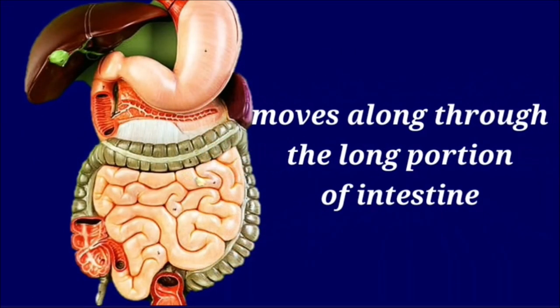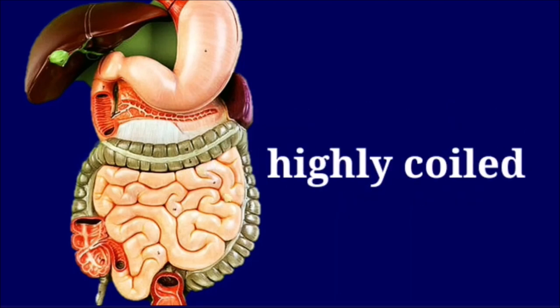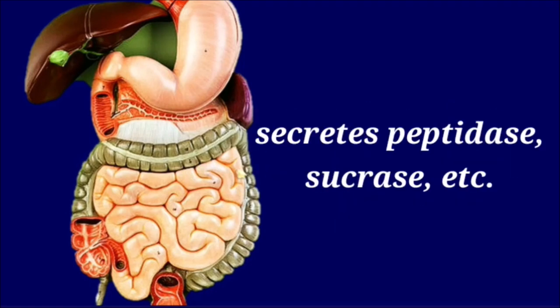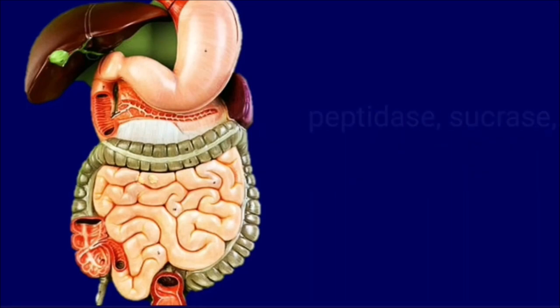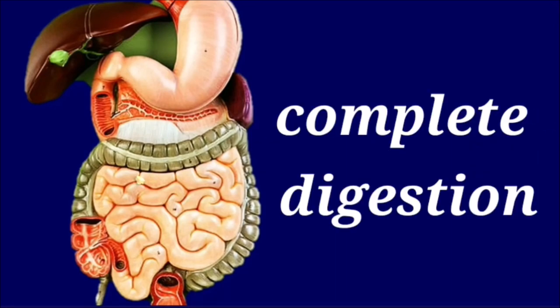After completion of this action, the food moves further and reaches the long, highly coiled portion of the small intestine. The walls of the small intestine contain intestinal glands which secrete intestinal juices containing several enzymes like peptidases and sucrase. The action of these enzymes ensures the complete digestion of carbohydrates, proteins, and fats.